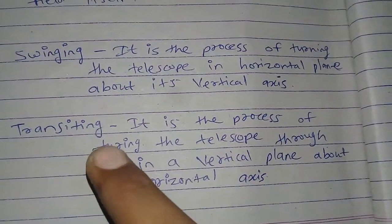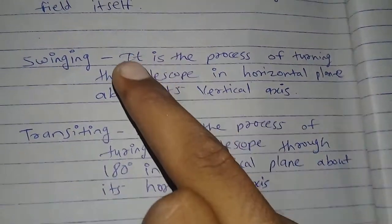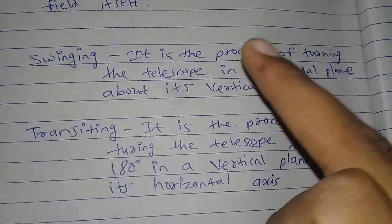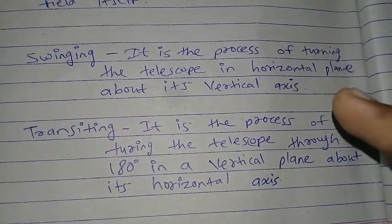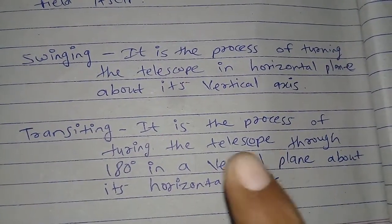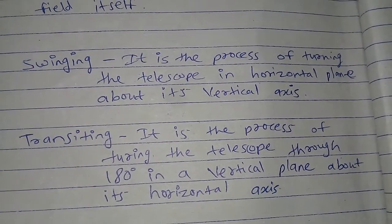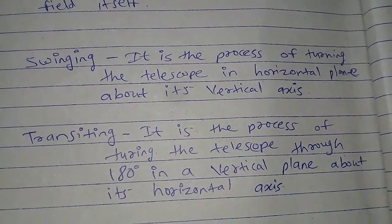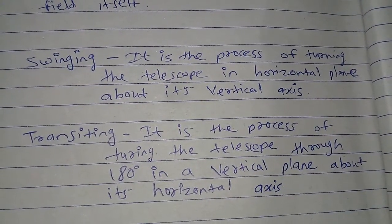Swinging and transiting. Swinging is the process of turning the telescope in a horizontal plane about its vertical axis.